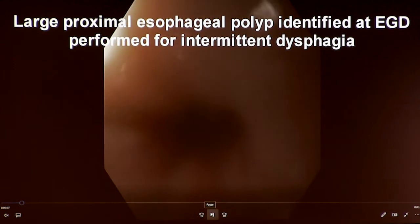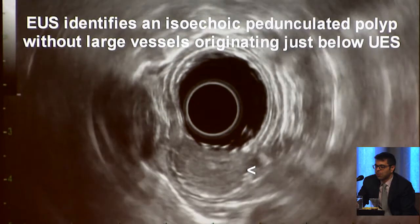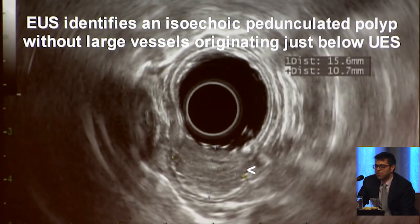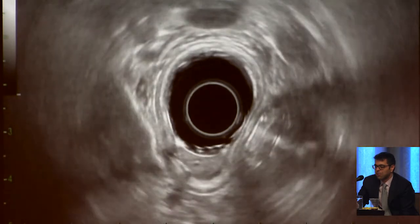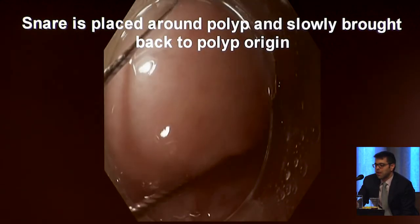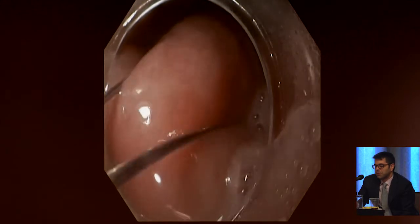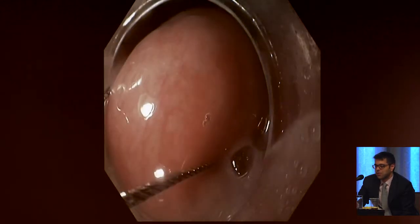All right. So here's the last of our resections — a pedunculated lesion in a different location from Dr. Keswani. Can you walk us through? This is the upper esophageal sphincter right there, and that's a polyp that was just sent to me to figure out what to do. This is the endoscopic ultrasound — you can see a long polyp. It's clearly just a pedunculated polyp in the esophagus. I put a cap on, which is going to be really important to try to work at that upper esophageal sphincter.